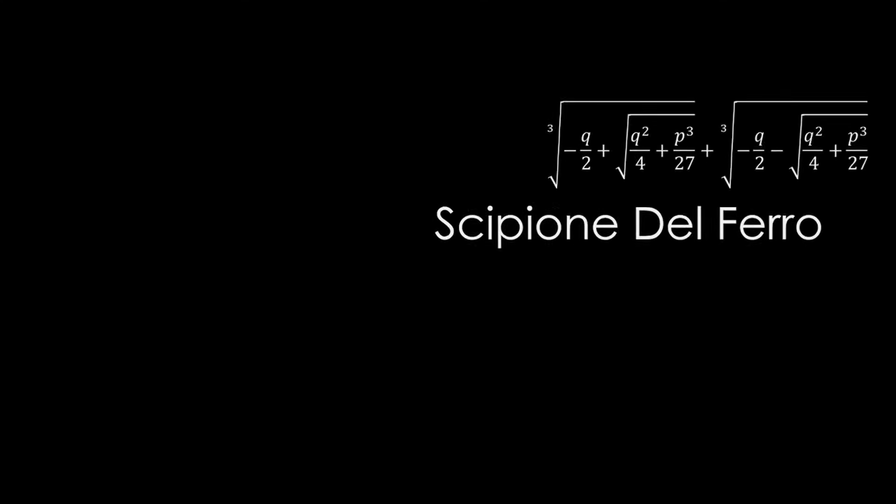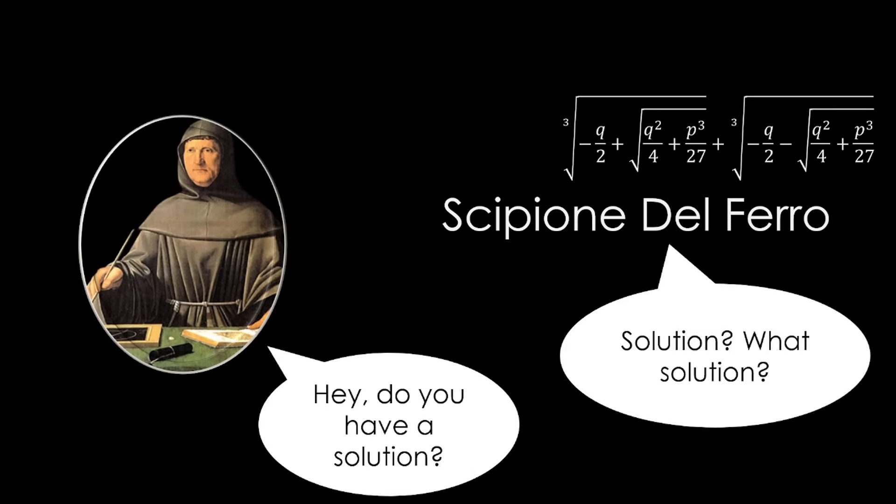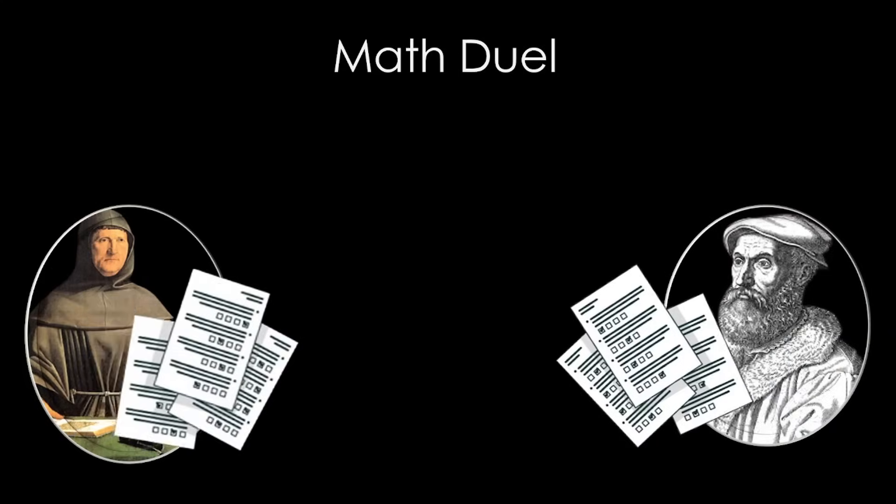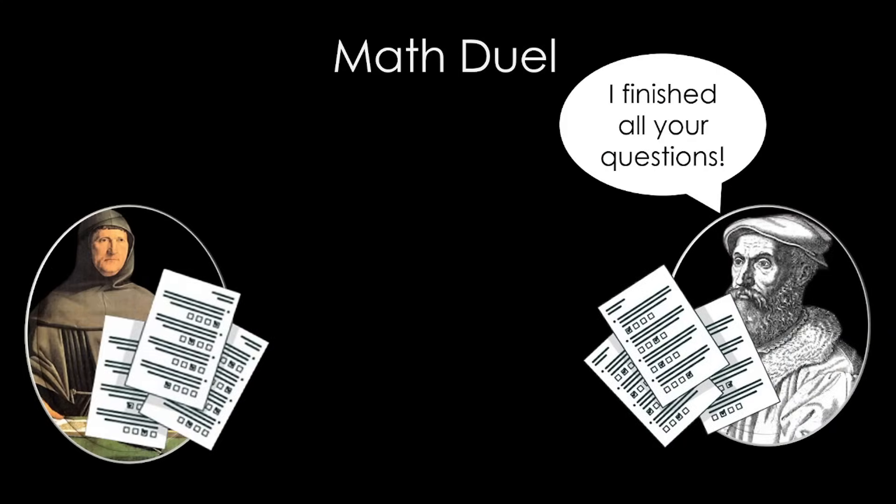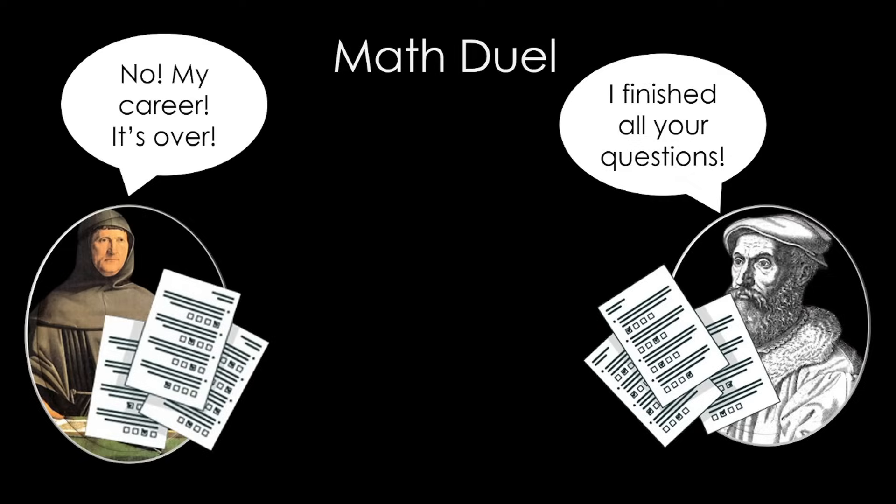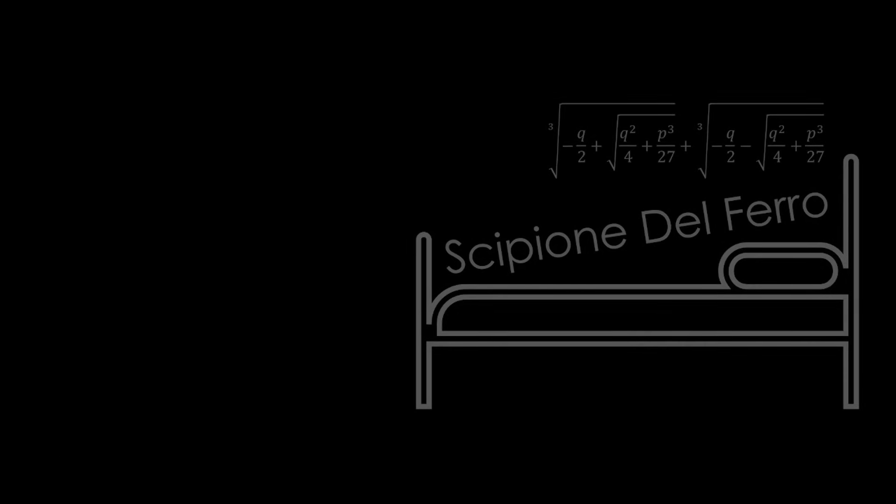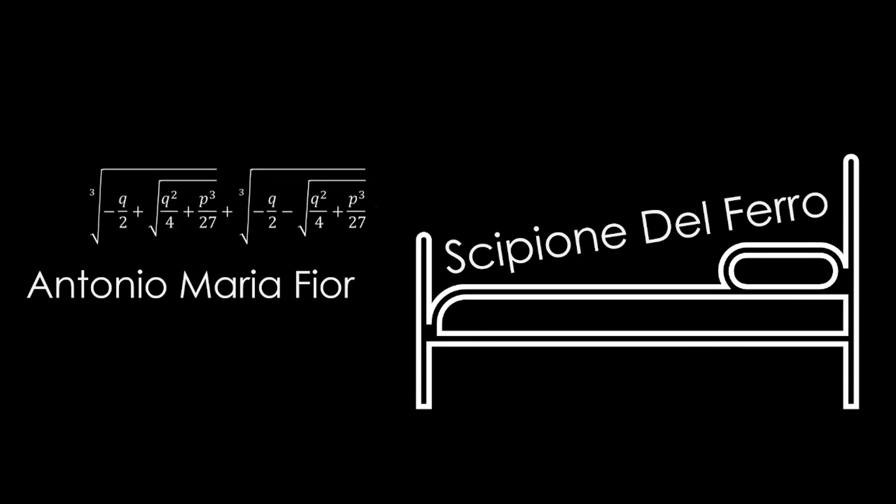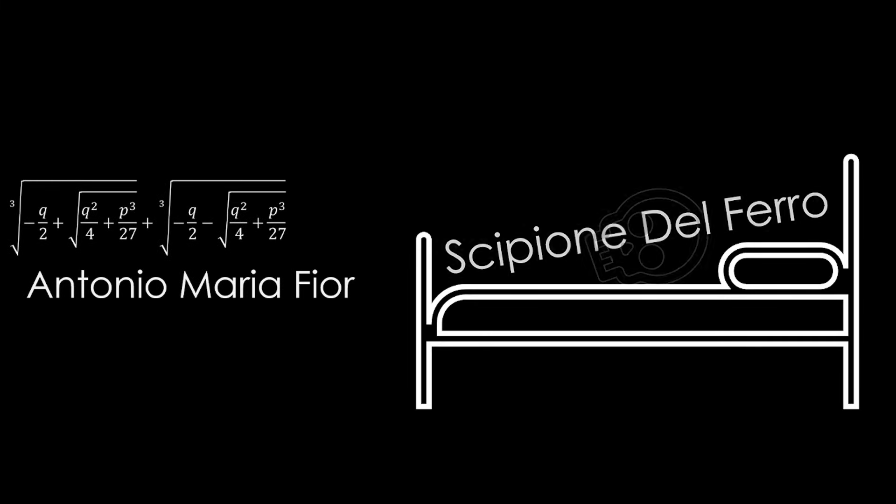Del Ferro would keep his new solution secret so that he could use it in his next math duel, which involved mathematicians challenging one another with a series of questions. The person who completed all the questions first would win, and the other person would lose their reputation, and often their career would be ruined. Hence, Del Ferro would only reveal his solution to his student, Antonio Maria Fiore, when he was on his deathbed.